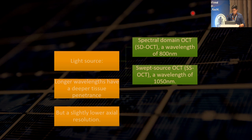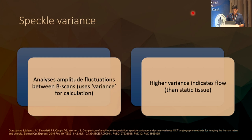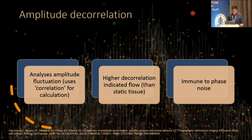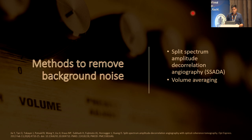The techniques for motion detection include: speckle variance — analyzes amplitude fluctuation between B-scans, where higher variance indicates flow versus static tissue; amplitude decorrelation — analyzes amplitude fluctuation using correlation for calculation and is not affected by phase noise; and phase variance — detects variation of phase of light when it intercepts moving objects, similar to ultrasound Doppler but more prone to noise. Methods to remove background noise include split spectrum amplitude decorrelation angiography (SSADA) or volume averaging.